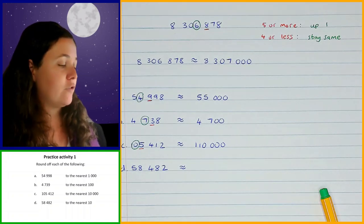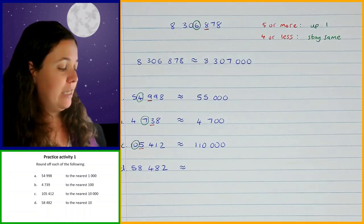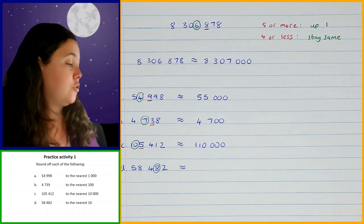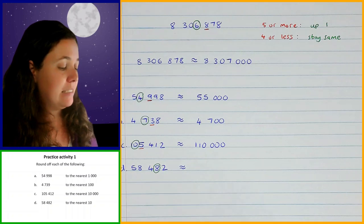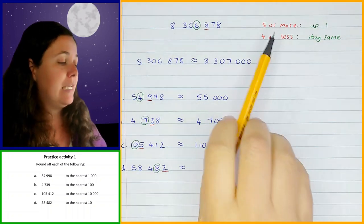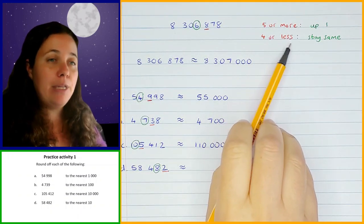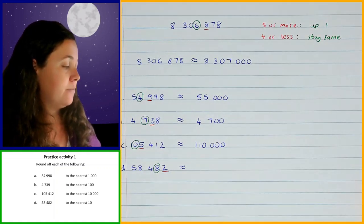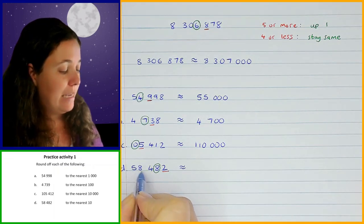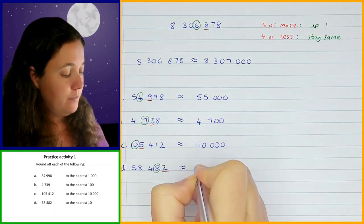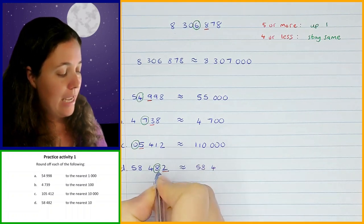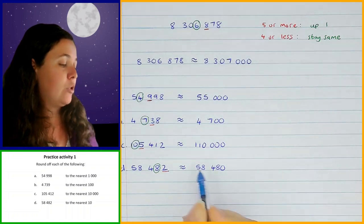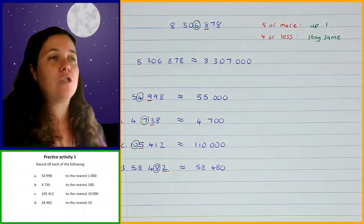Question D: we are rounding off to the nearest ten. The tens position is the eight. Looking at the next digit — the two — two is in the four or less category, so the eight stays the same. Then this two changes to a zero, so the answer is 5,840. That's what you should have got for each of those questions.